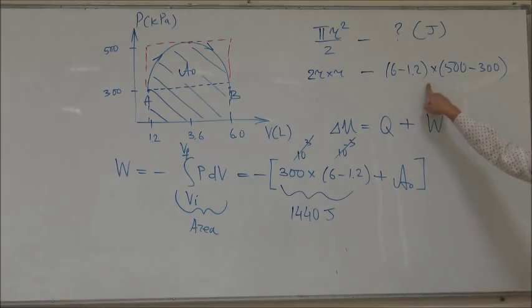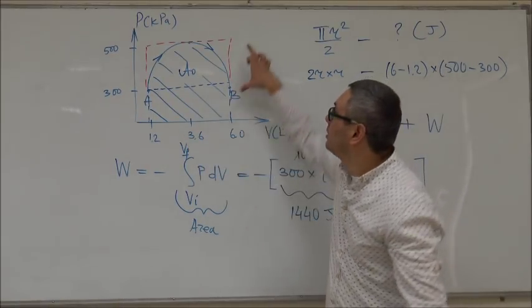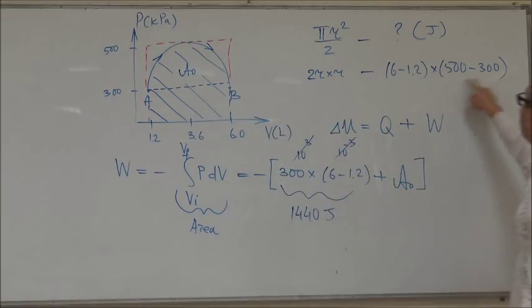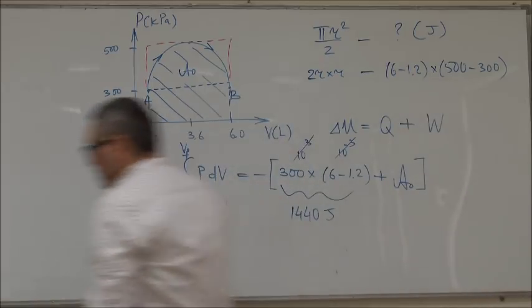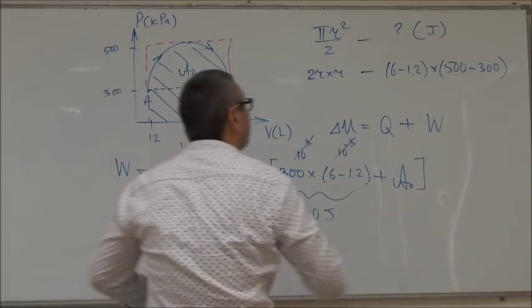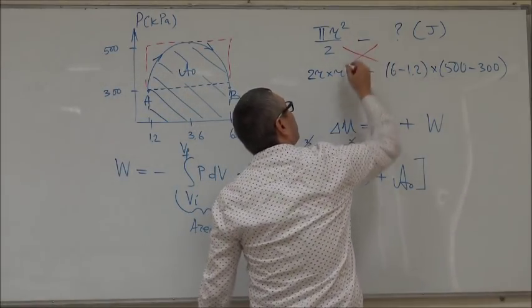But we know that this area geometrically corresponds to the area of the semicircle, which corresponds to this area in energy: 6 minus 1.2, that's this side, multiplied by 500 minus 300, that's the vertical side. And so you just now calculate for this unknown area by making a proportion.